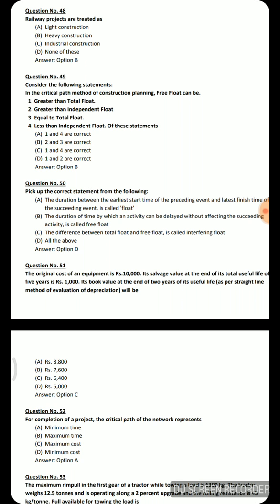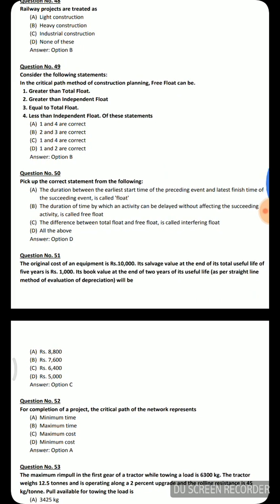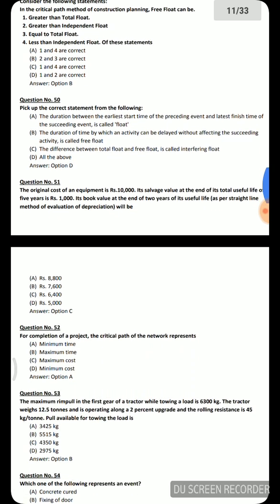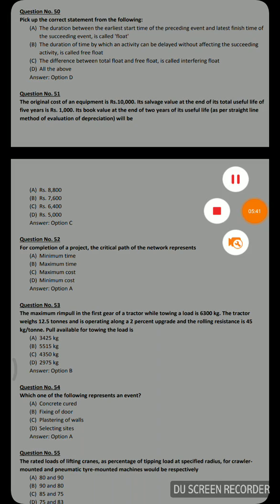Next question — pick up the correct statement from the following: the duration between the earliest start time of the preceding event and the latest finish time of the succeeding event is called float; the duration by which an activity can be delayed without affecting the succeeding activity is called free float; the difference between total float and free float is called interfering float. All three options are correct, so the answer is option D — all of the above.